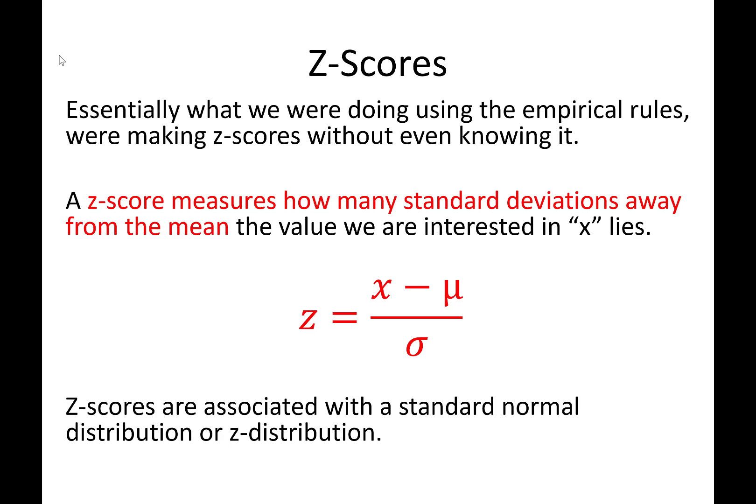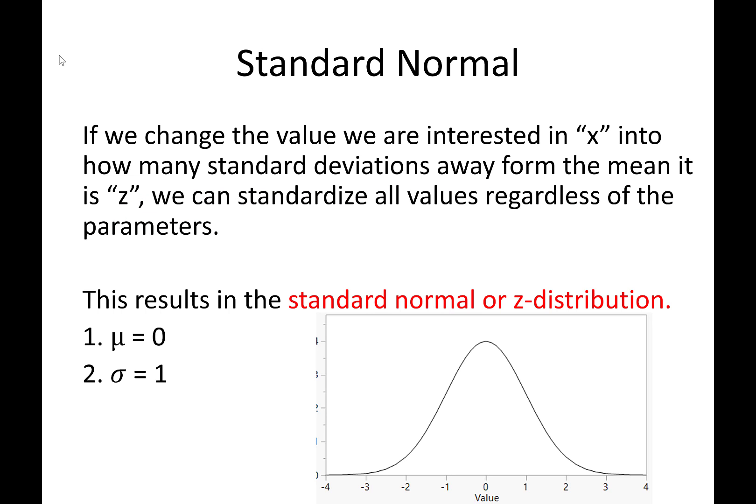Z-scores are associated with what we call a standard normal distribution or a z-distribution. So let's go check out what that is. A standard normal or a z-distribution essentially changes every single value you're interested in into a standardized z-score. And you can turn any single normal distribution into the standard normal or z-distribution. All you would do is you would compare all of your values into how many standard deviations away from the mean they are.